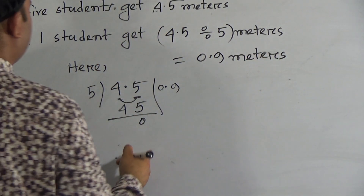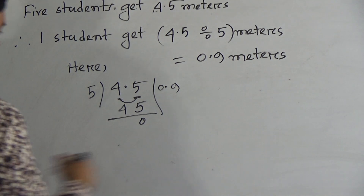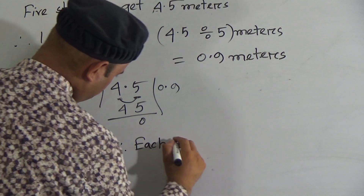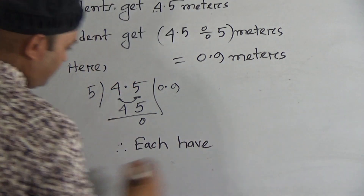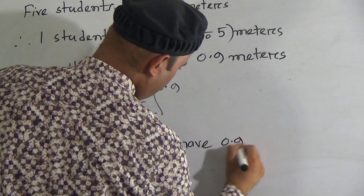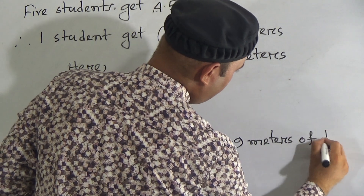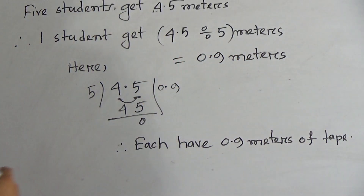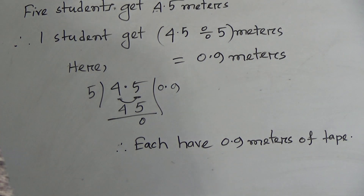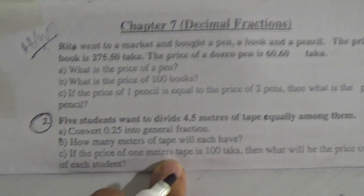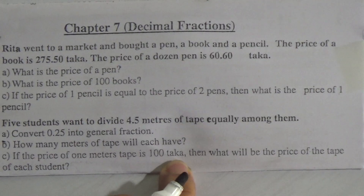So we can write: each student gets 0.9 meters of tape. Hope you understood this one. Now, number C — if the price of 1 meter of tape is 100 taka, then what will be the price of the tape of each student?